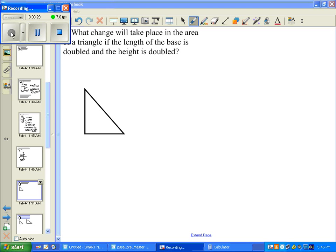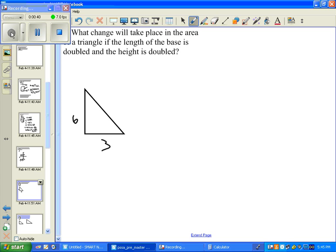So let's call this—for the sake of argument, we'll call this 3, and we'll call this 6. The area for a triangle is equal to A equals one-half base times height.